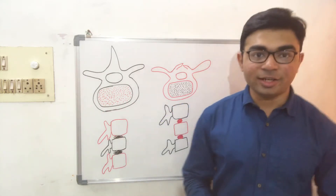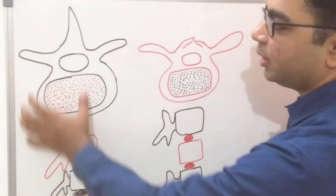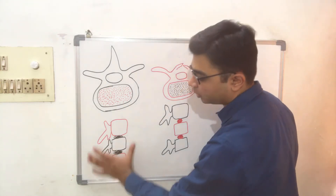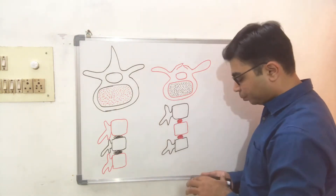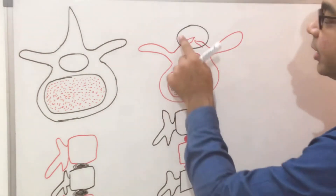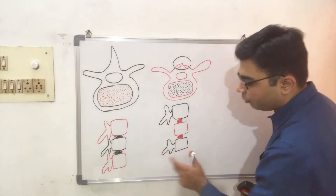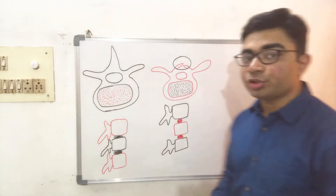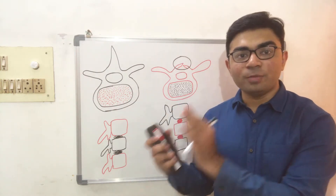Looking at this diagram, we have the superior view and the lateral view of the vertebra. In the normal vertebra, all parts are appreciable in both views. However, in the case of spina bifida, there is defective fusion of the vertebral arch visible in the superior view, and the posterior elements of the vertebral canal are not observed in the lateral view.